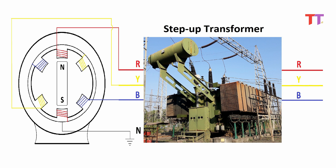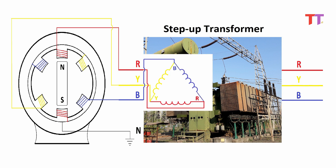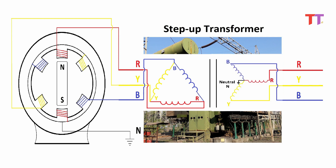Generated power is stepped up using step-up transformers and then transmitted at high voltage. Usually generator transformers are delta-star connected, meaning the primary LV winding is delta connected and the secondary HV winding is star connected.